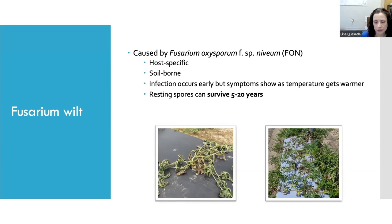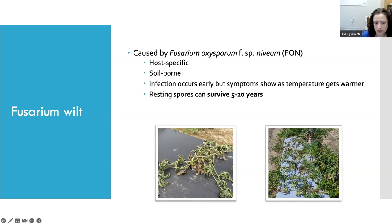The spores can persist — literature reports anywhere from five to twenty years — so going back to watermelon can still be a little risky, especially if the inoculum has had a chance to build up. Something really interesting about this disease is that infection actually occurs early in the growing season because the pathogen prefers cooler soil temperatures, but you only see symptoms later in the season as it gets hot and the plants look wilted.